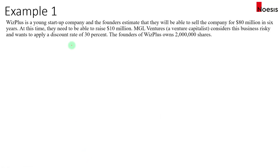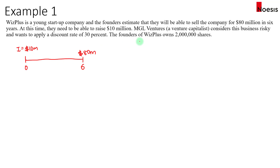Let's look at this example where Visplus is a young startup company and the founders estimate that they will be able to sell the company for $80 million in six years time. They will need to raise $10 million — an investment of $10 million today. MGL Ventures is a venture capitalist considering this business and wants to apply a discount rate of 30%. The founders of Visplus own 2 million shares at this moment.